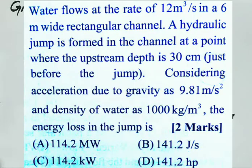Hi everyone, this is a GATE 2020 question on open channel flow worth 2 marks. Water flows at a rate of 12 m³/s in a 6 meter wide rectangular channel. A hydraulic jump is formed in the channel at a point where the upstream depth is 30 centimeters just before the jump. Considering acceleration due to gravity as 9.81 m/s² and density of water as 1000 kg/m³, the energy loss in the jump is to be found.